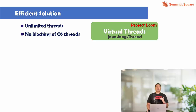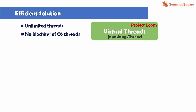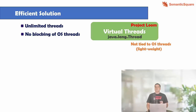From Java 21 onwards, the Thread class can be used to create either a platform thread or a virtual thread. The class has acquired some new methods to create virtual threads, but unlike platform threads, virtual threads are not tied to OS threads. That's why they are lightweight Java objects, and since they are instances of the Thread class, we can refer to them as lightweight threads.